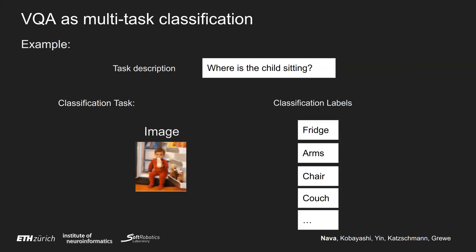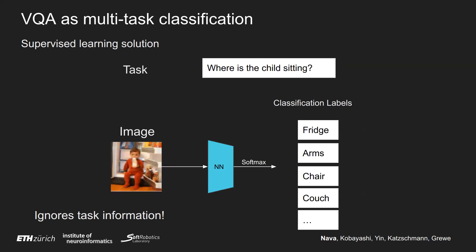Here is an example of one task: the 'Where is the child sitting?' task. The task descriptor is the question, and to every image is associated a classification label. To solve this task, the classic deep learning approach is to simply train a neural network classifier on the image, like a CNN.